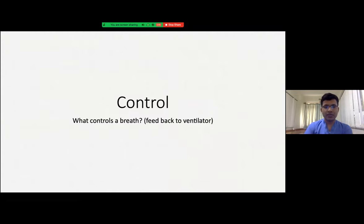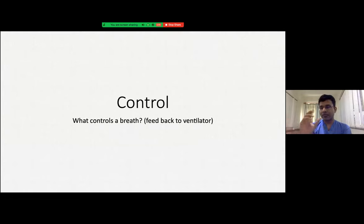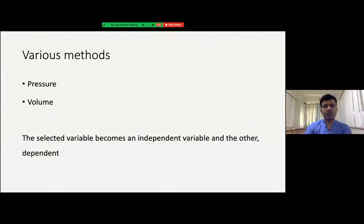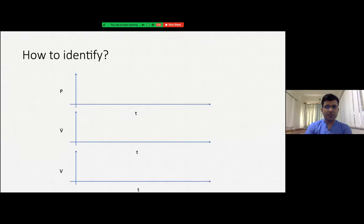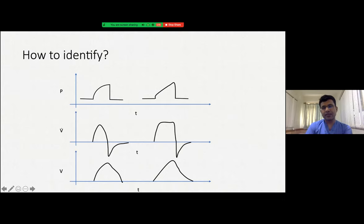Control is what actually controls a breath — usually pressure or volume control, with flow control being rarely used. In pressure control, the ventilator looks only at pressure and regulates the other two parameters based on it. In volume control, it focuses regulation on volume, and flow and pressure are managed accordingly. On the pressure time scalar, only the pressure curve is smooth while flow and volume are titrated accordingly. In volume control mode, the volume curve is smooth while pressure and flow are titrated accordingly.